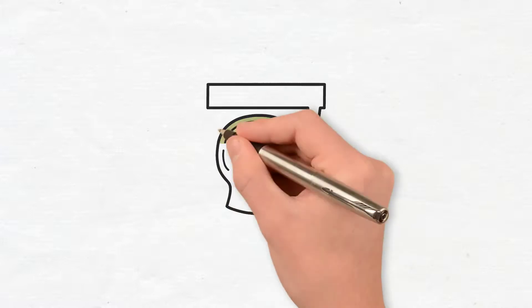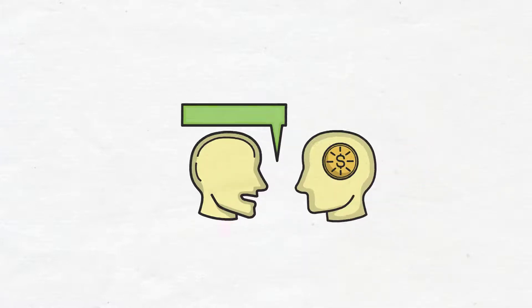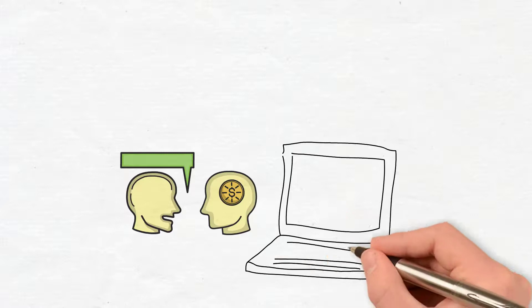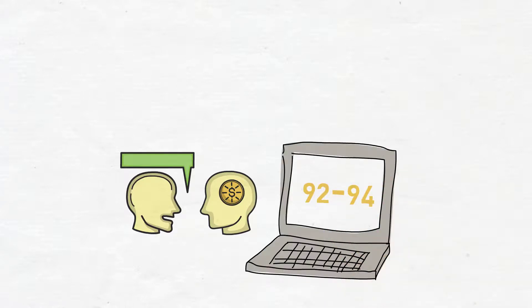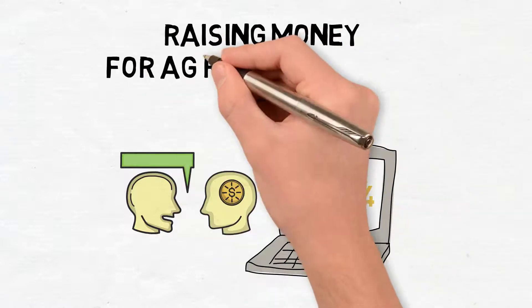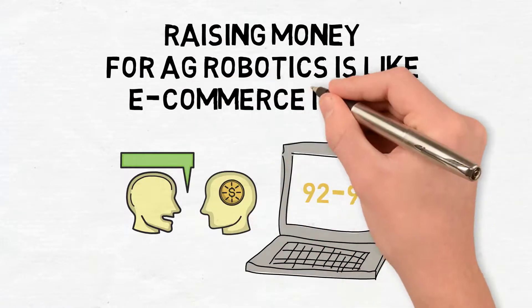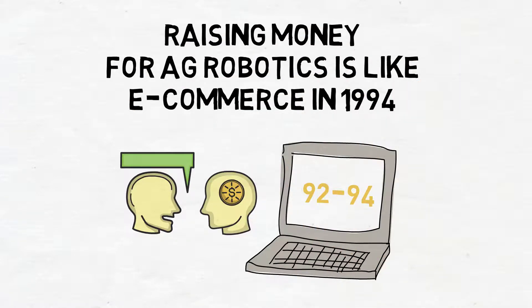How were those discussions with investors? I got on the internet in 97, but I listened to the stories from the early days in 92, 94. I think raising money for ag robotics specifically right now is akin to trying to raise money for e-commerce in 1994.